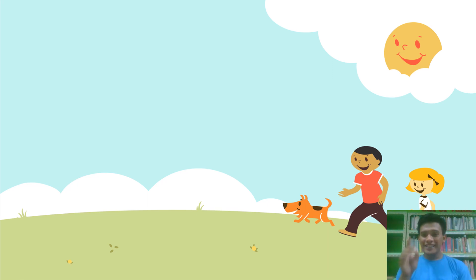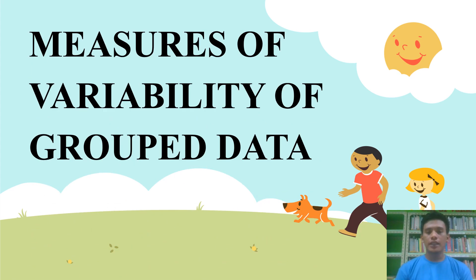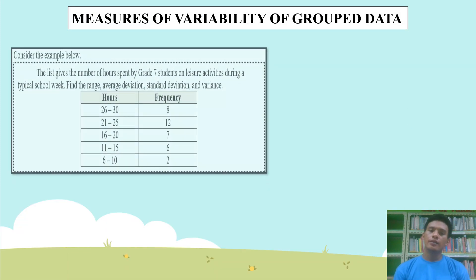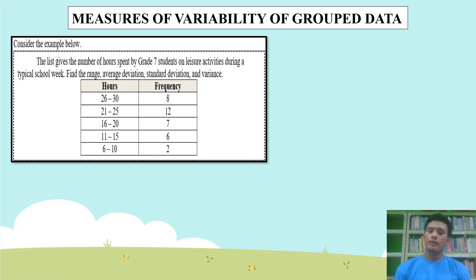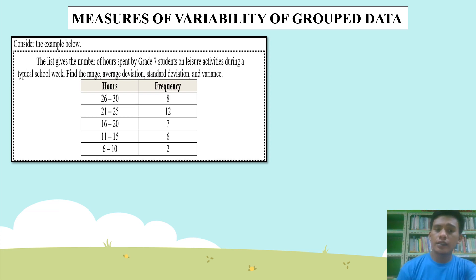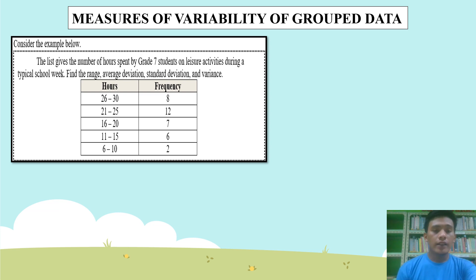Good day, math learners! I'm back. In this topic, we will discuss measures of variability of grouped data. Consider the example below. The list gives the number of hours spent by grade 7 students on leisure activities during a typical school week. Find the range, average deviation, standard deviation, and variance.